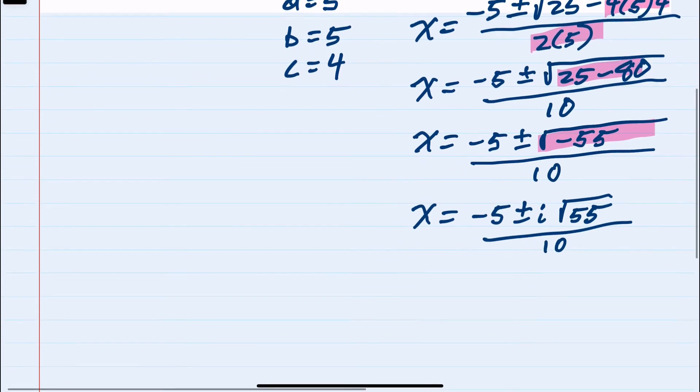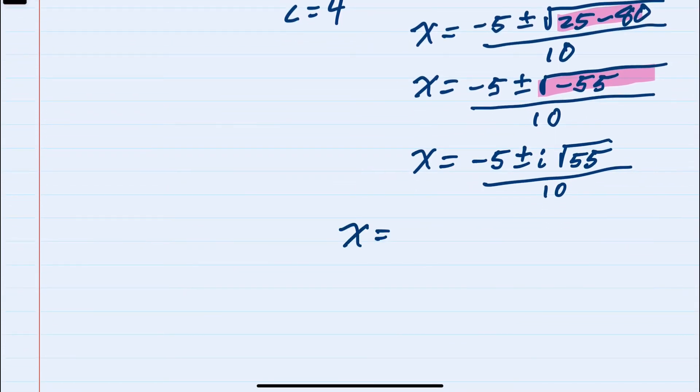So our two solutions are x equals negative 5 plus i square roots of 55 over 10, and negative 5 minus i square roots of 55 over 10. And if you're tempted to try to cancel in some way this 5 and 10,